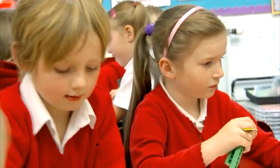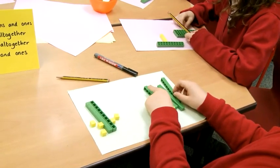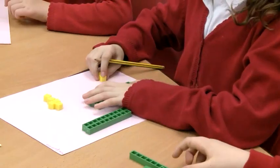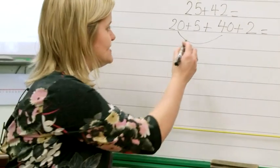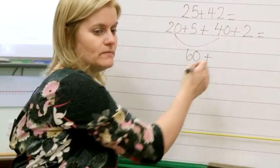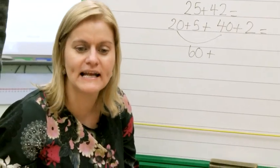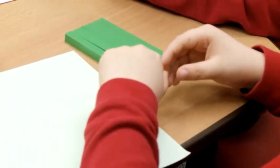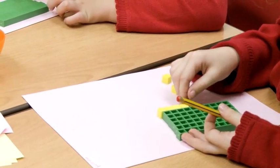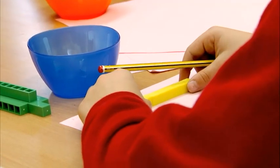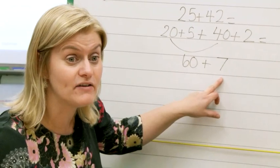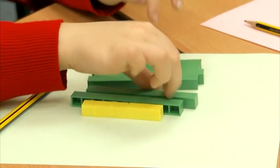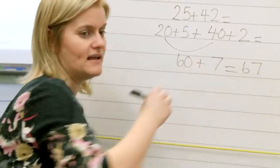Dienes will obviously be easier for them to manipulate when they start working with bigger numbers. Can you put all of your 10s together please? How many 10s have you got? 6. You've got 6 tens which is 60. Now I'm going to add my 1s together. 7. So I've got 6 tens which is 60, and 7 ones. So how much have we got altogether? 67.